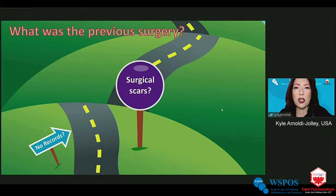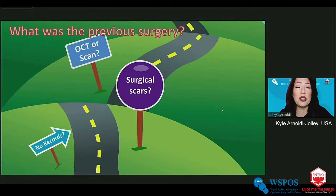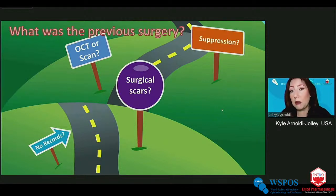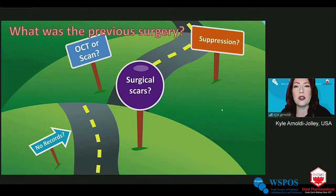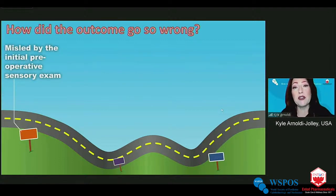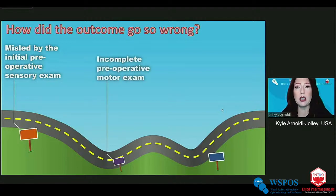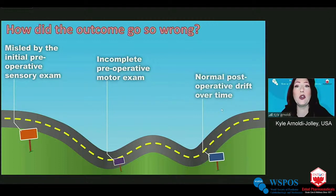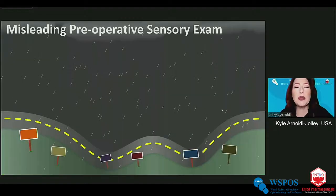We might look for surgical scars over the rectus muscles, or use OCT or other imaging to find the location of previously operated muscles. Even the sensory exam can help determine the history and evolution of the strabismus. How did the outcome go wrong? It may be that we were misled by the initial preoperative sensory exam, the motor exam was incomplete, or perhaps nothing went wrong and this is a normal postoperative drift that occurred over time.